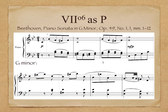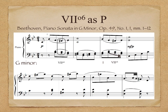Here's an example of VII°⁶ expanding the tonic through passing motion in Beethoven's piano sonata in G minor. Listen to the example and see if you can identify the passing VII°⁶. The VII°⁶s here move in stepwise motion between I⁶ and I in the first and third measures, effectively expanding the tonic harmonies in both of those measures. In fact, this expansion creates one harmony change per bar from I to V to I, concluding at the end of the phrase on a half cadence on V. Listen to the example once more and follow along with the analysis, paying particular attention to the stepwise passing motion of the VII°⁶s.